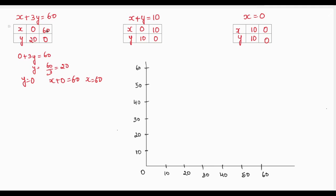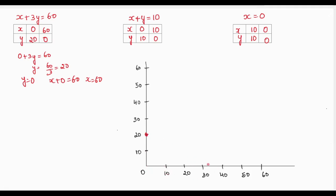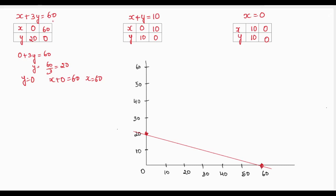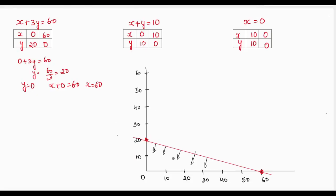Now we have the values for all three lines and will plot the graph. For x + 3y = 60: when x = 0, y = 20, and when y = 0, x = 60. We draw the line through these points. Since the constraint is x + 3y ≤ 60, we shade the area below the line.